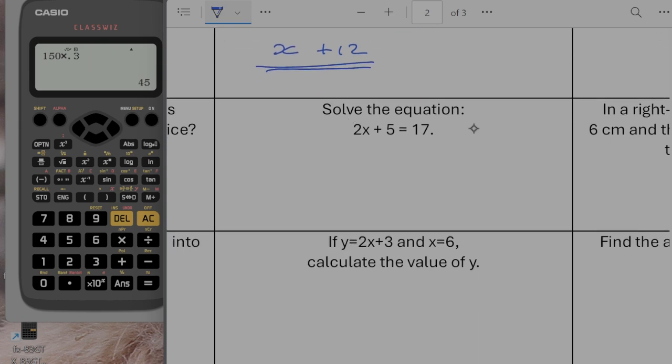Question 2. Solve the equation. So I'm going to minus 5 from both sides. So that gives me 2x is equal to 12. I'm then going to divide both sides by 2 to give me x is going to be equal to 6.